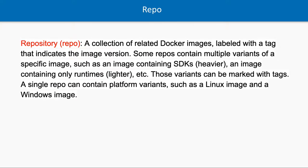A repository — you can compare it to an npm repository or GitHub repository. It is a collection of related Docker images labeled with tags and versions. Some repositories contain multiple variants of a specific image: some are lighter images, some are heavier. An image is essentially a mini Linux system. Heavier images have other applications installed; lighter ones have a minimal set of instructions. You may have heard of alpine, buster, and slim — these are all image variants. You can have tags, versions, and these different variants.